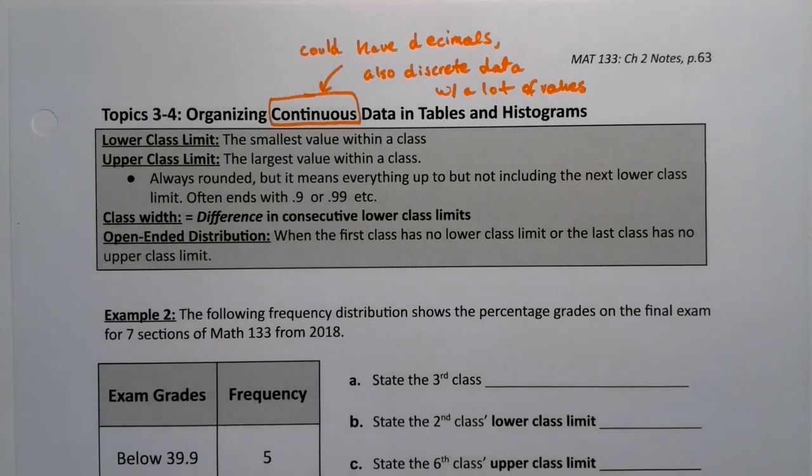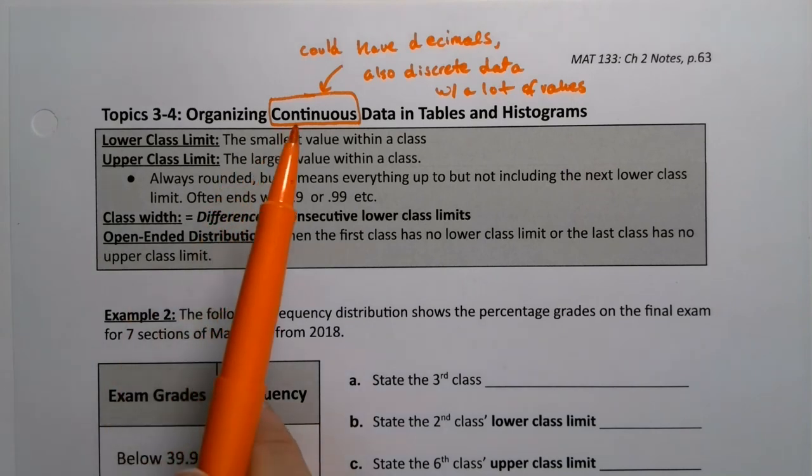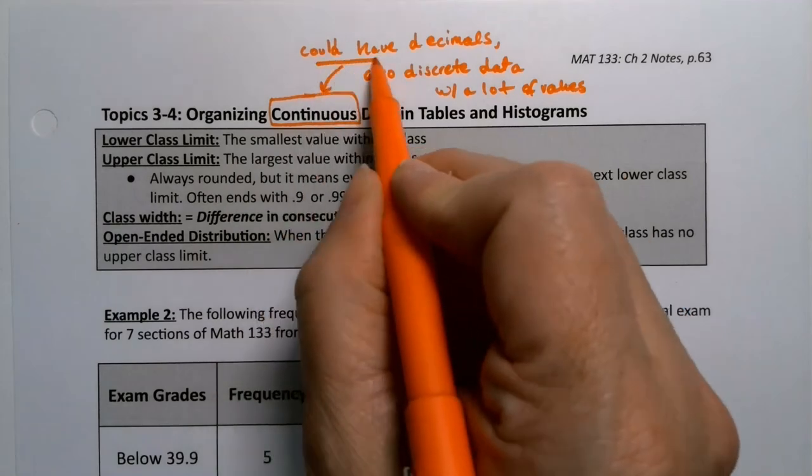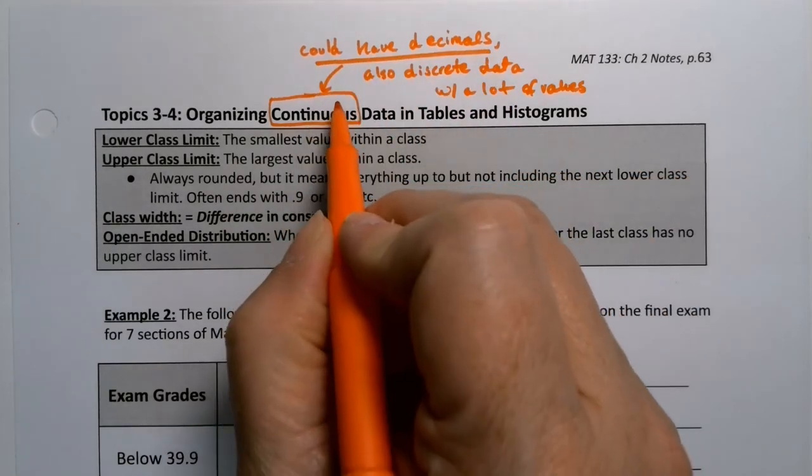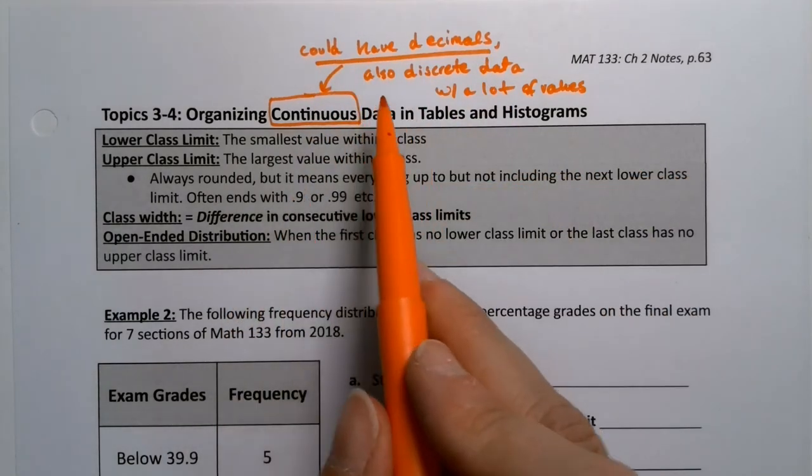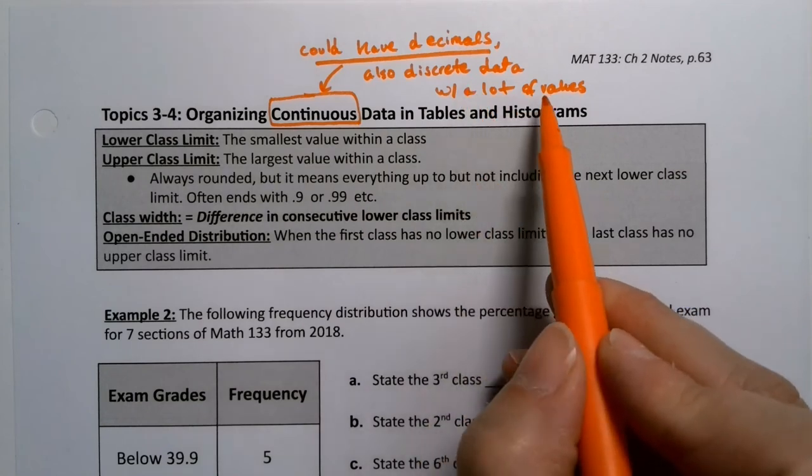We've learned how to organize and make graphs for discrete data. Now we want to learn how to organize and make graphs for continuous data. It's a little bit of a cheat. Continuous data are data that could have decimals, but we also do these same techniques for discrete data when there's a lot of values.